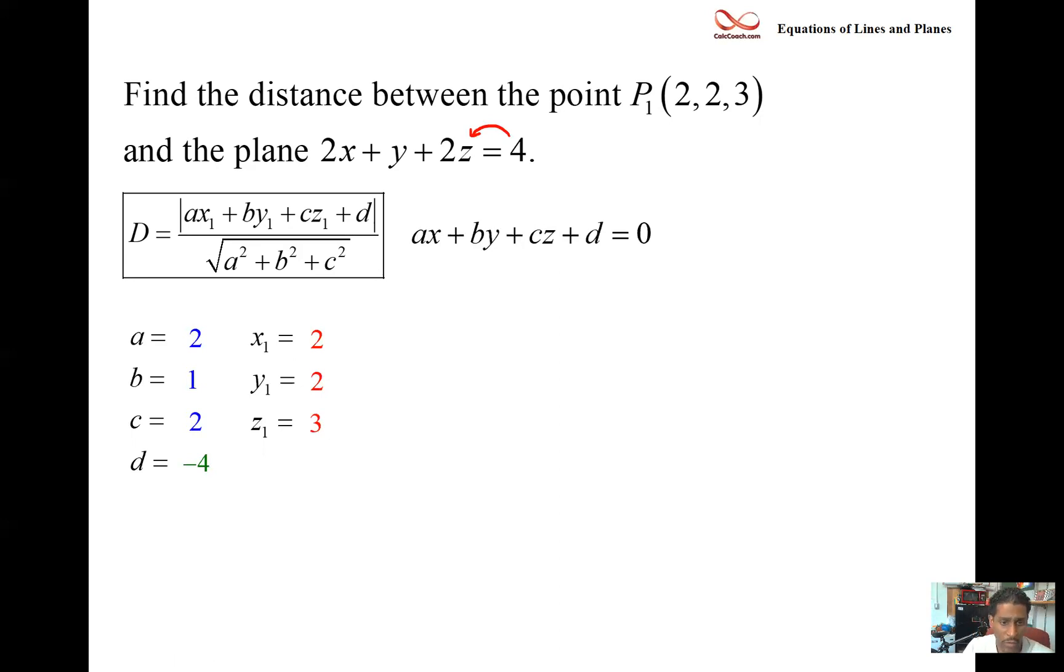We have a times x₁, so we want to multiply these two guys together. b times y₁, c times z₁, plus d. If it happens to be negative, we'll slap absolute value bars around it. And we divide by the magnitude of the normal vector 2, 1, 2.